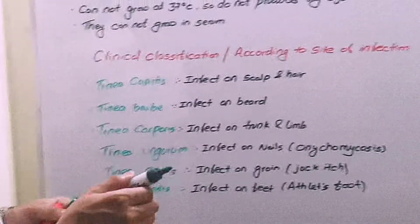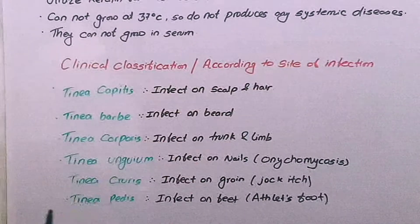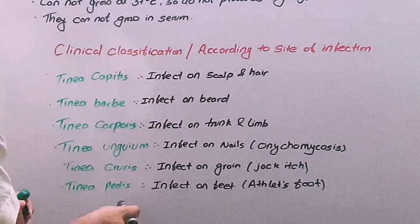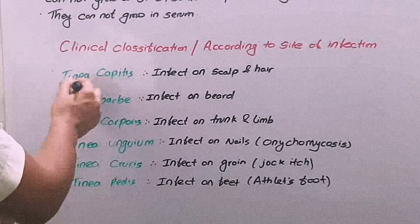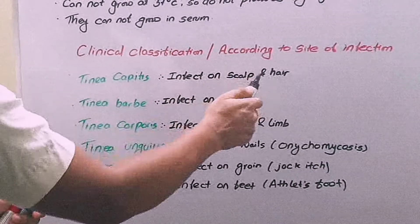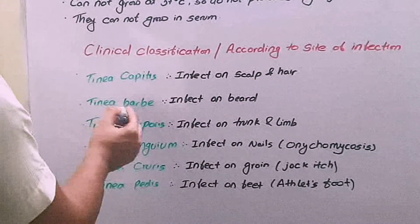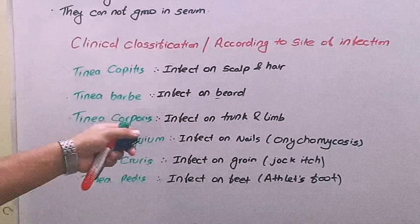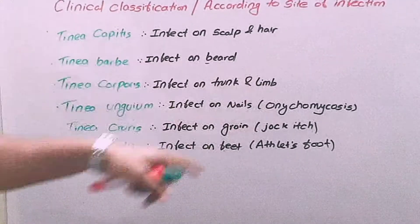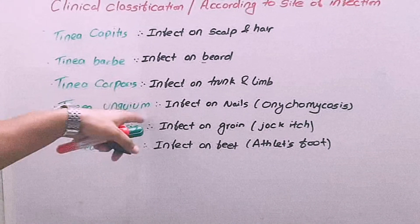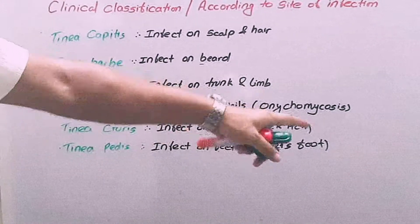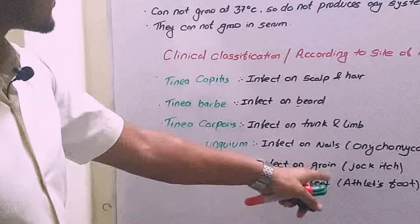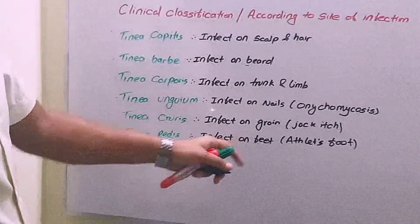This classification is based on site of infection from top to bottom, that is from head to feet: tinea capitis infects the scalp and ear, tinea corporis infects the trunk and limb, tinea unguium infects the nails and is called onychomycosis, tinea cruris infects the groin, and tinea pedis infects the feet.